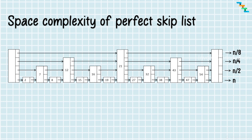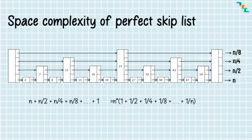The space complexity of the perfect skip list is linear. At the bottom level we have the linked list with space complexity O(n). In every immediate top layer, the size is reduced to half: n/2, then n/4, and so on till 1 in the topmost layer. Taking n out gives n × (1 + 1/2 + 1/4 + ... + 1/n), which totals less than 2n. So the space complexity of the skip list is linear.